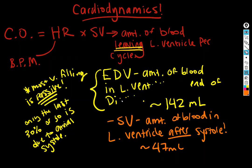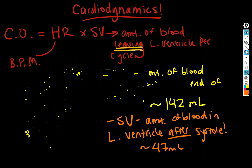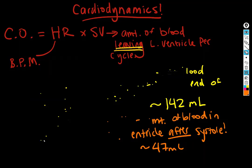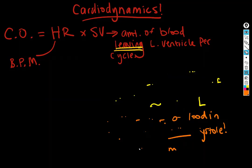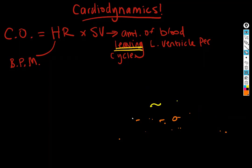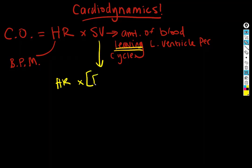We use EDV and ESV to calculate stroke volume. Let's rewrite the formula: stroke volume equals end diastolic volume minus end systolic volume.